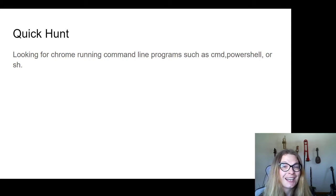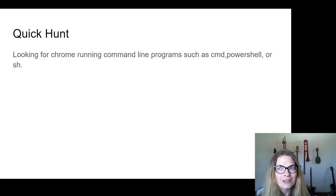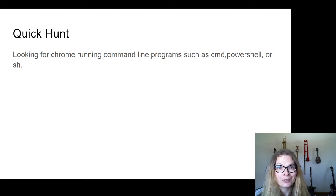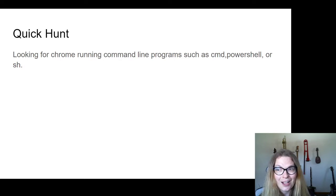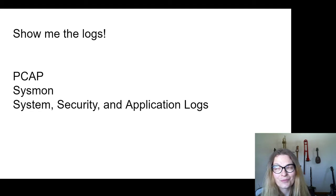For a quick hunt: look for Chrome doing things Chrome shouldn't be doing. If you were going to run an exploit kit, you'd probably be running some sort of command line — maybe living-off-the-land binaries. Baseline it: Chrome is going to run things like Chrome Helper or Chrome Native Messenger, but it shouldn't be running other programs that have shells on them.